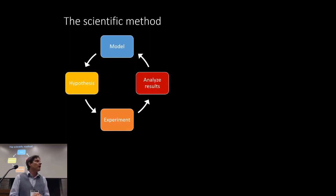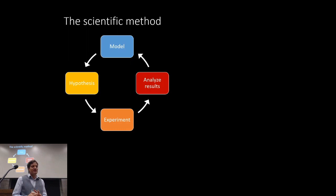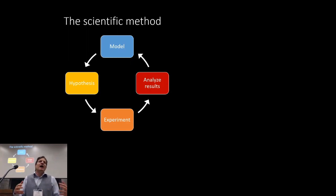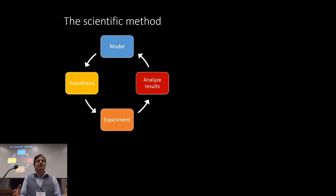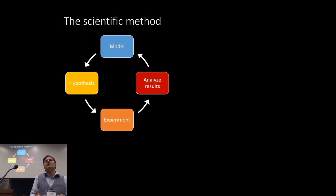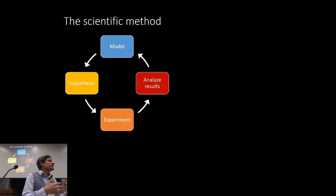Let's go back and explore the motivation. It starts with the scientific method. A nice simple diagram: ideally you start with a model — a representation of the world as you imagine it. You add mathematical models, emit hypotheses, test them through experiments, analyze results, extract knowledge, and verify or invalidate the hypothesis. Then you adjust your model to make it more realistic.